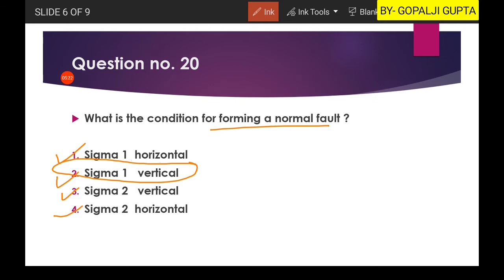So if you have a box like this and if you want to increase the length of this, definitely you have to pressure it in this direction, sigma 1 vertical. So you can correlate it with your general common sense that this is for the crustal extension.